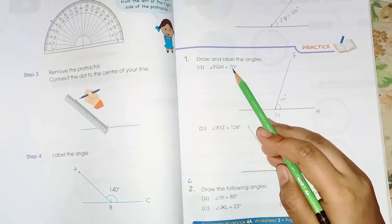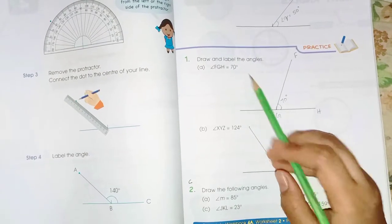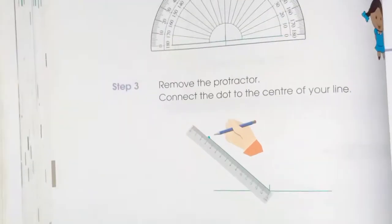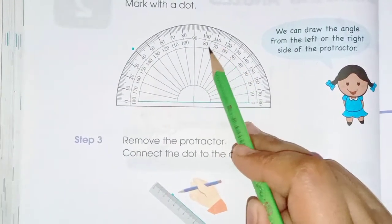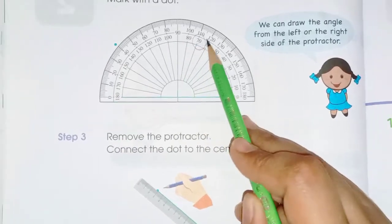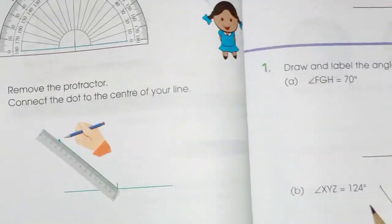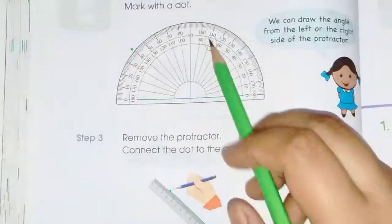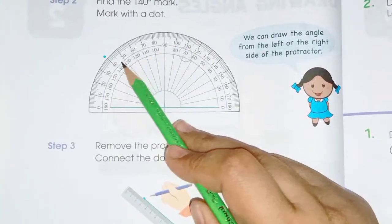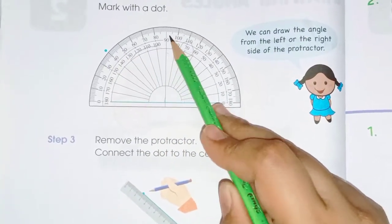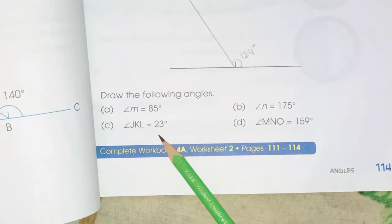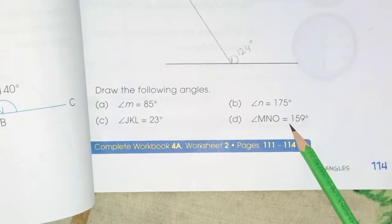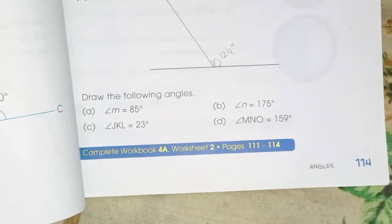On page 114, angle 70 means you measure from the lower-number side of the protractor because 70 is less than 90. Angle 124 is measured from the other side because it is more than 90.